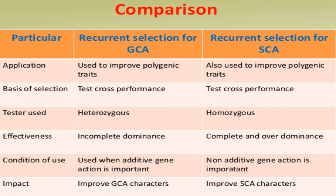Regarding effectiveness, in general combining ability incomplete dominance is observed, whereas in specific combining ability complete and over-dominance is observed. For condition of use, general combining ability is used when additive gene action is important, while specific combining ability is used when non-additive gene action is important. The impact of general combining ability is improvement of general combining characters, whereas specific combining ability improves specific combining ability characters.